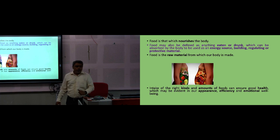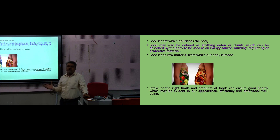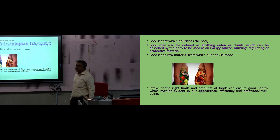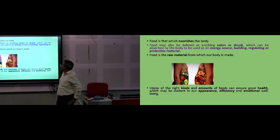How is this food made and what is the basic existence of it? Day-to-day food is that which nourishes the body. By definition, food may be defined as anything eaten or drunk which can be absorbed by the body to be used as an energy source, for body building, regulating, or protecting. Not everything available in nature can be eaten. Food is the raw material from which our body is made.